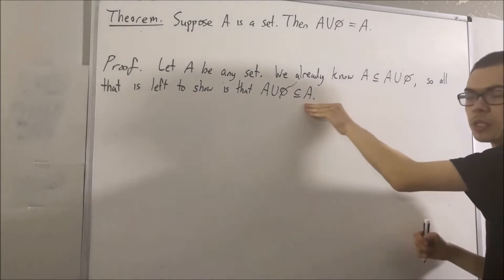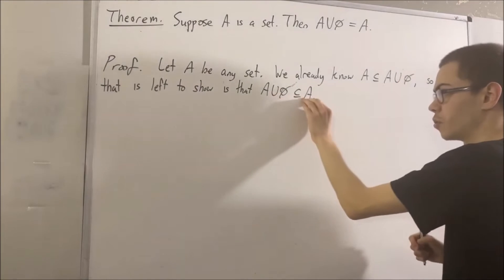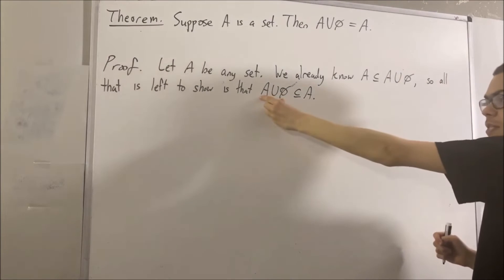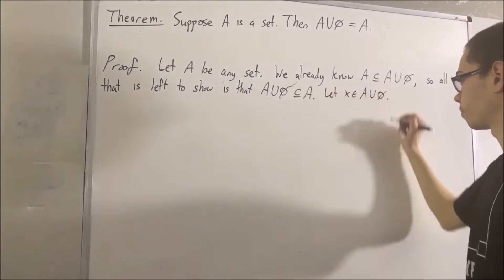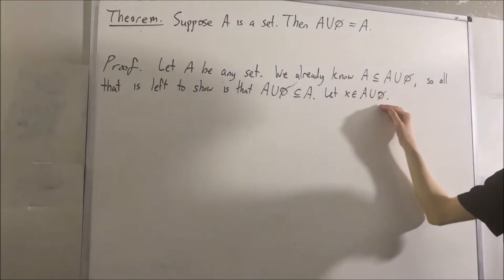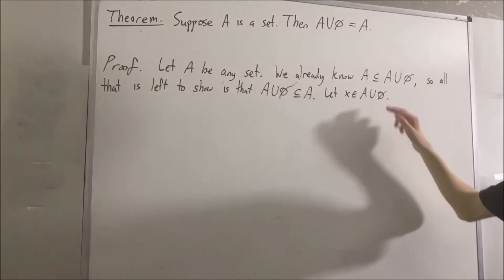So let's show that this is true. We're trying to show that everything in this set is also in this set. So give me an arbitrary element of this set. I'll call it X. What does this mean? Well, by definition of the union of sets, this means that either X is an element of A or X is an element of the empty set.